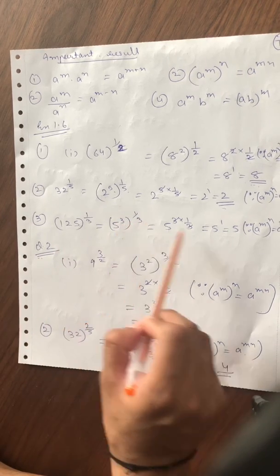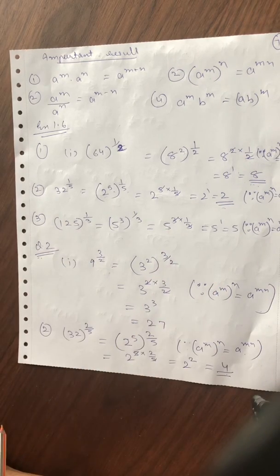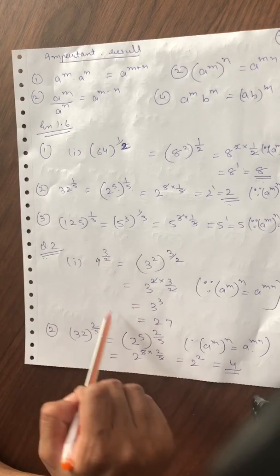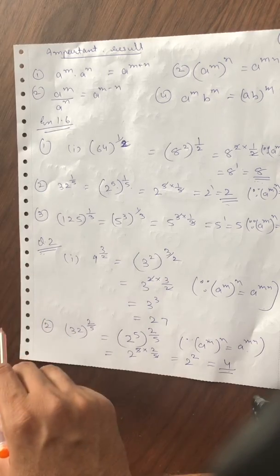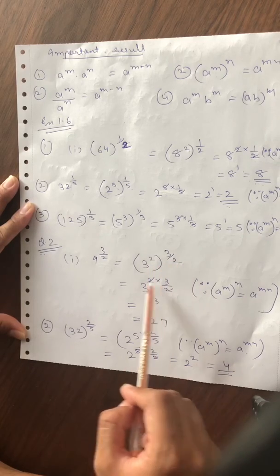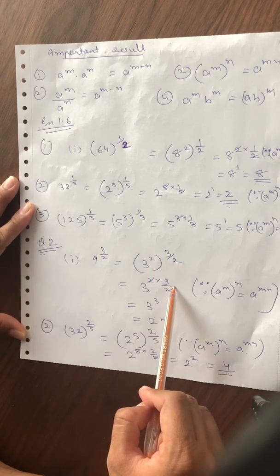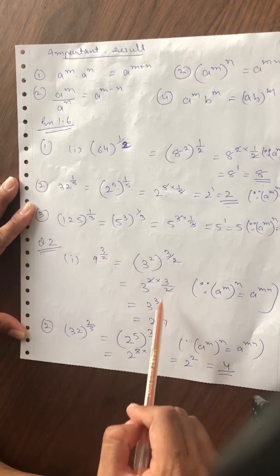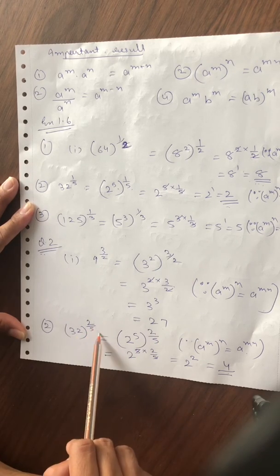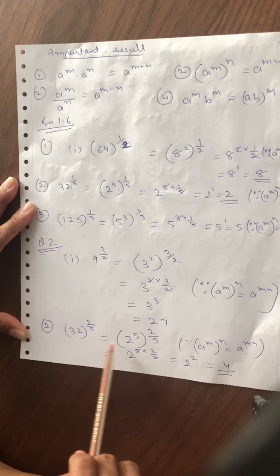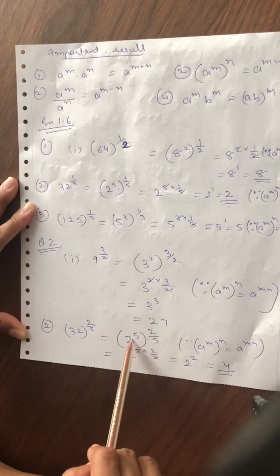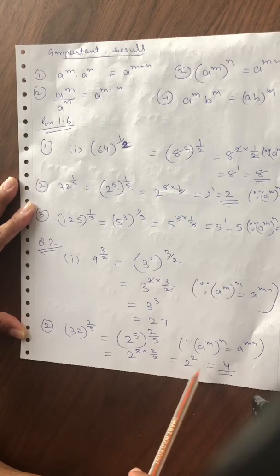Equation 2 में: 9^(3/2)। 9 को 3² लिखेंगे, तो (3²)^(3/2) = 3^(2×3/2) = 3³ = 27। वैसे ही 32^(2/5): 32 को 2^5 लिखेंगे, तो (2^5)^(2/5) = 2^(5×2/5) = 2² = 4। 16^(3/4): 16 को 2^4 लिखेंगे, तो (2^4)^(3/4) = 2^(4×3/4) = 2³ = 8।